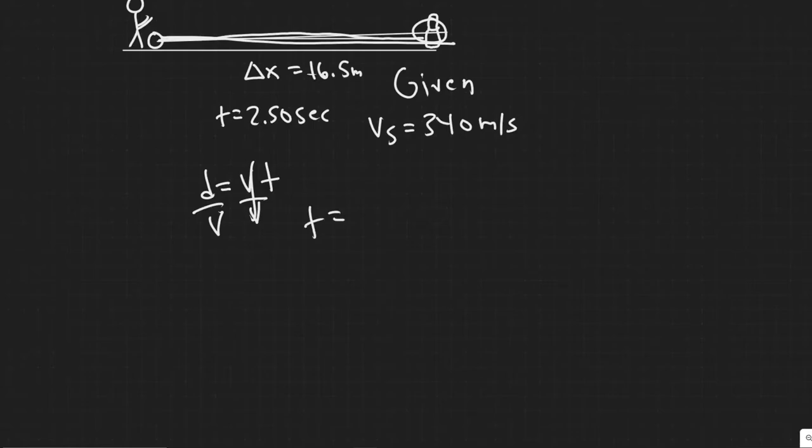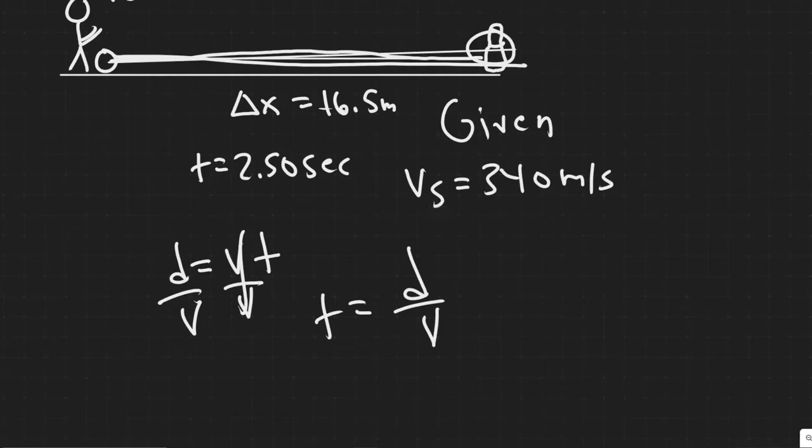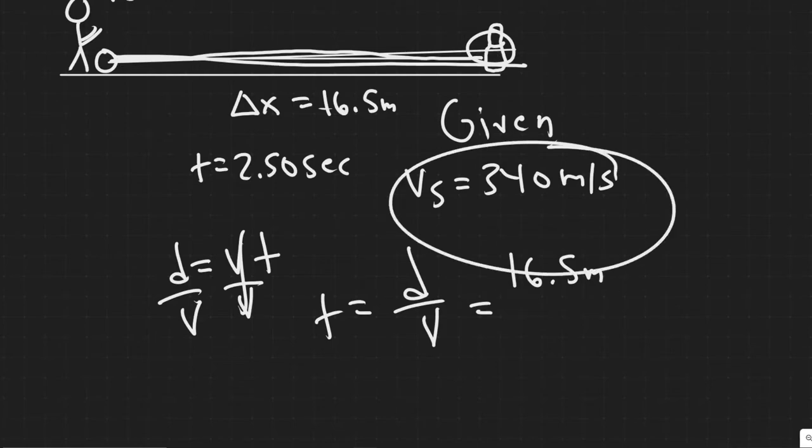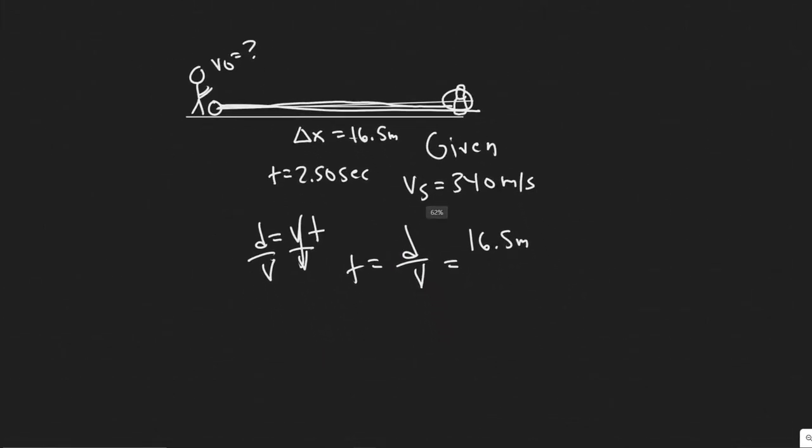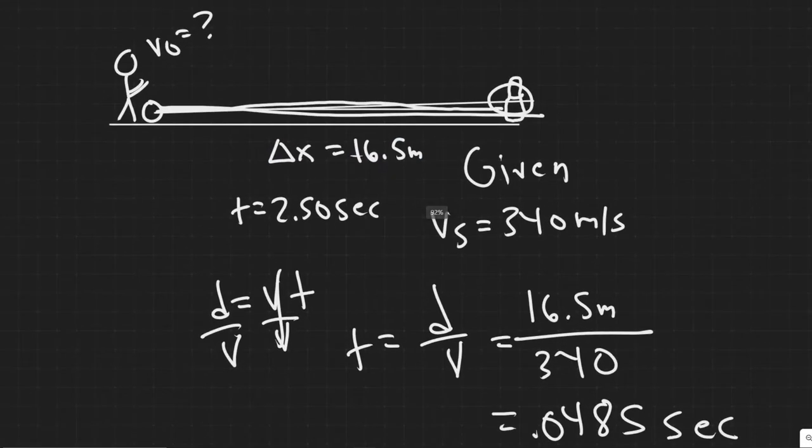So we know the distance the sound is going to have to travel, 16.5 meters. And we know how fast the sound travels. They tell us that. It's 340 meters per second. So dividing this value, 340, let me plug this in for you guys, 16.5 divided by 340, you get 0.0485. So this is the amount of time in seconds that it takes for the sound to travel.